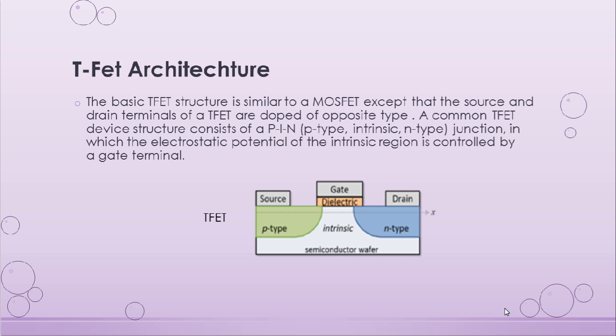The TFET architecture is similar to that of a MOSFET, except that the source and drain terminals of a TFET are doped with opposite type dopants. Additionally, a common TFET device structure consists of a P-type, intrinsic, and N-type junction — a P-I-N junction — in which the potential of the intrinsic region is controlled by the gate.